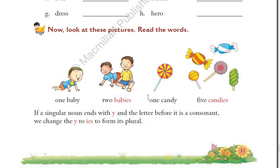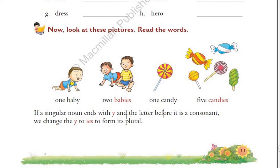You have two criteria: the word should end with Y and the letter before that should be a consonant. For example, in the word 'candy,' it ends with Y and the letter before is D, which is a consonant. Vowels are A, E, I, O, U. The remaining alphabets from A to Z are consonants. So D is a consonant, which means we replace Y with IES.